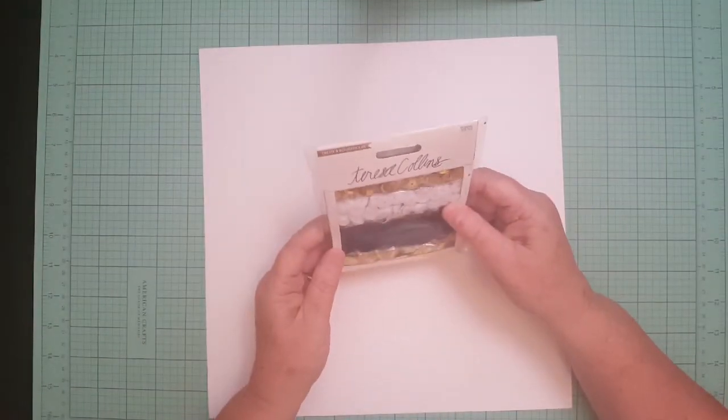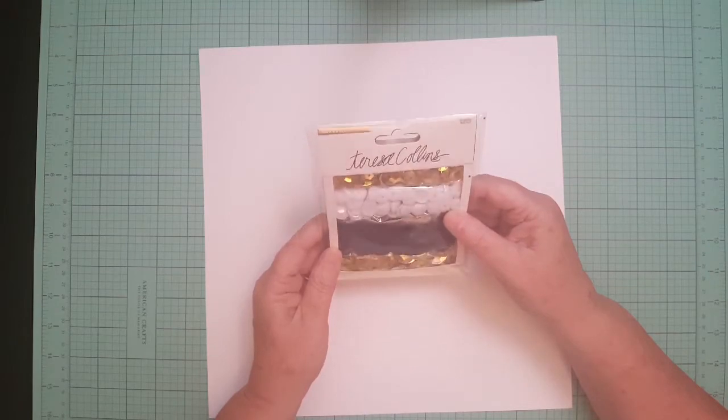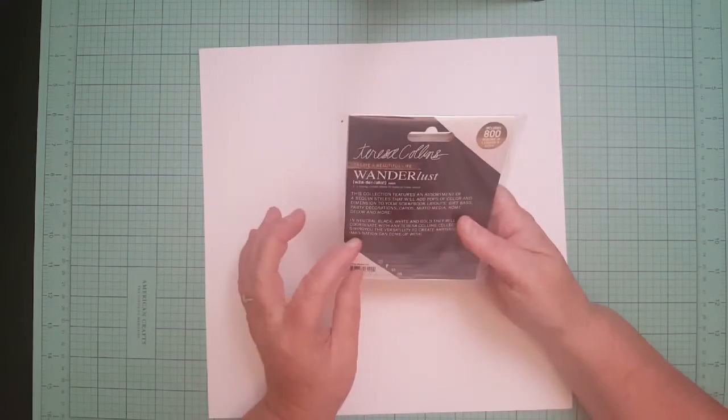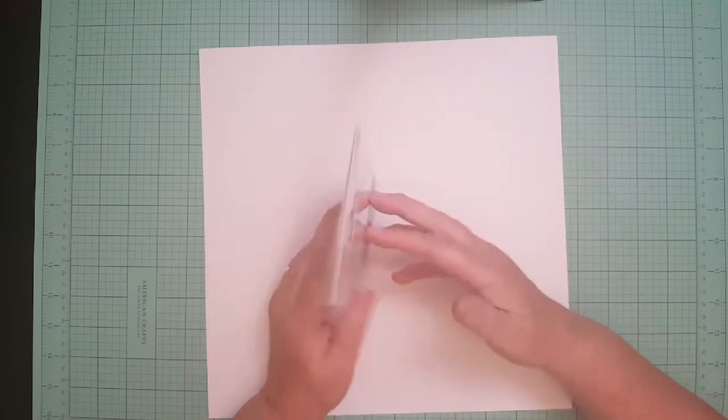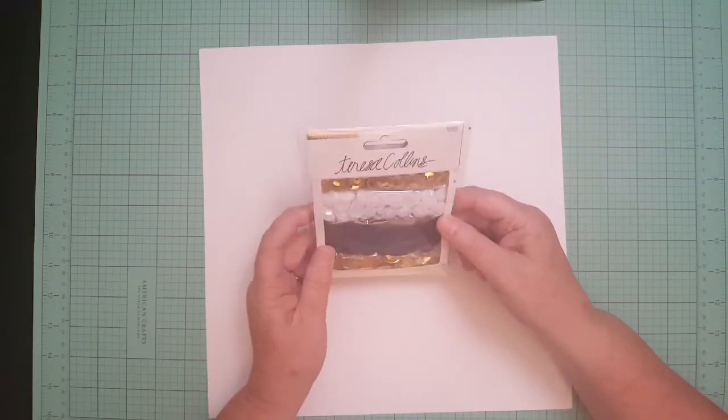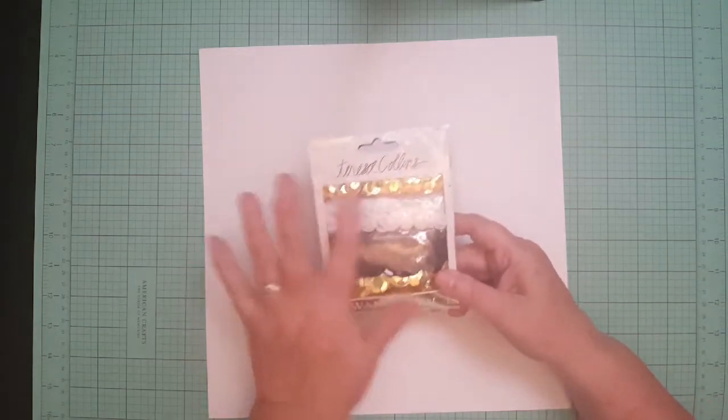I got these by Teresa Collins, giant sequins, 800 of them. Those are beautiful, gorgeous. The colors she gave me are blacks, gold, oranges.